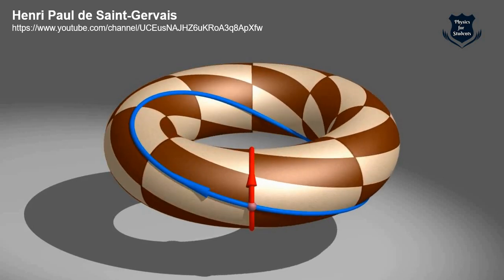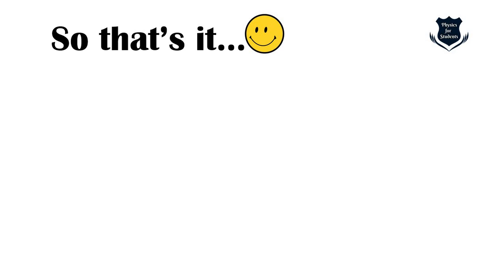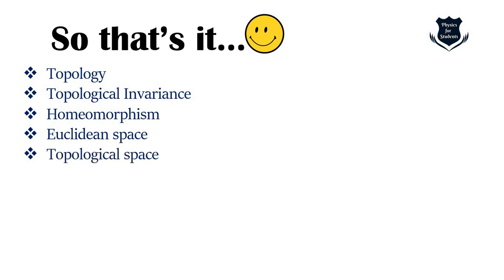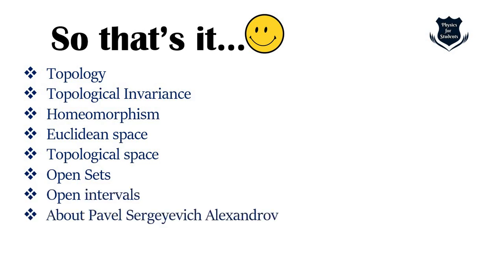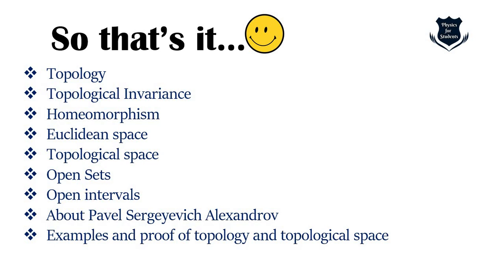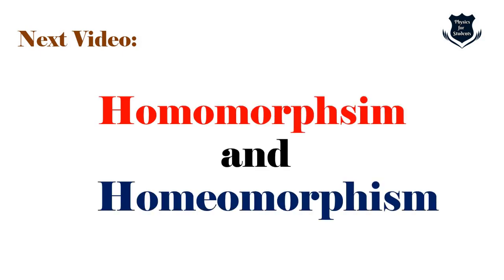So that's the first part of the video. We learned: what is topology; what is topological invariance — a property that doesn't change; what is homeomorphism; how we move from Euclidean space to topological space; what open sets are; what open intervals are; a little about Pavel Sergeyevich Alexandrov and the Alexandrov topology; examples and proof of topology and topological space; and a demonstration of the Dehn twist. My next video will be on homomorphism and homeomorphism — two terms that require careful attention before going into the mathematical part of topology.